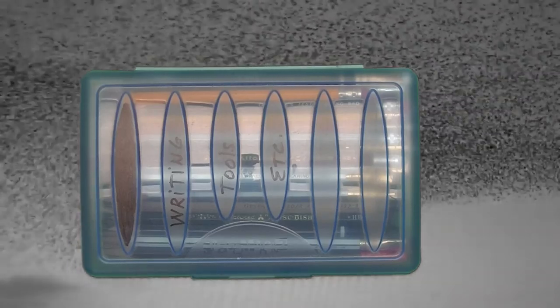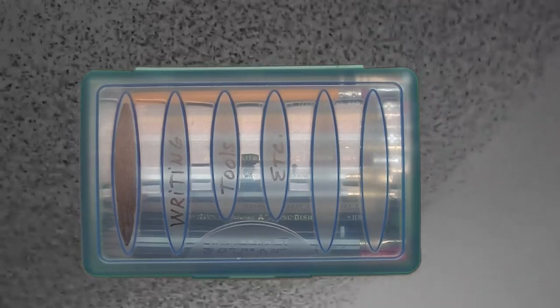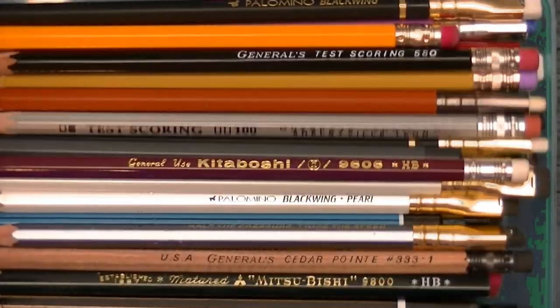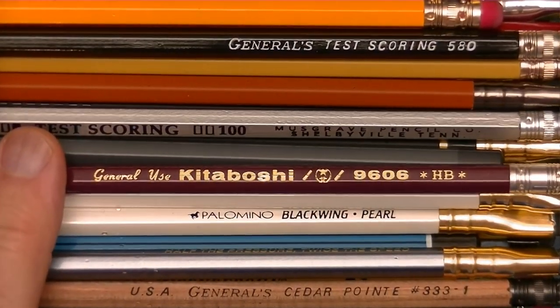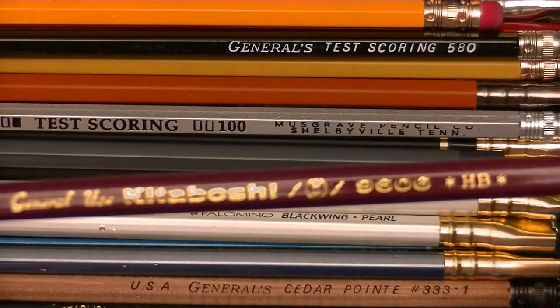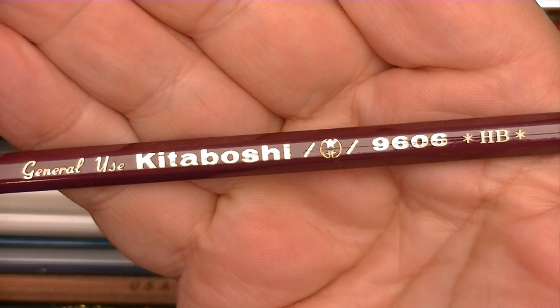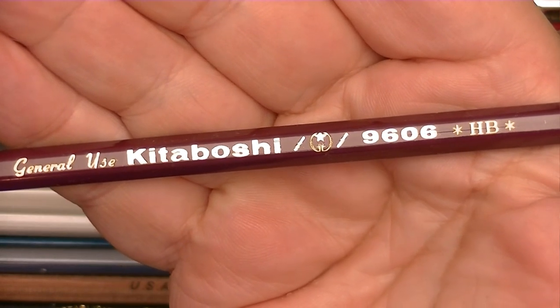Hello YouTube, we're going to take a look at another pencil today. Today's pencil is going to be the Kitabashi 9606 HB pencil, so let's check it out.